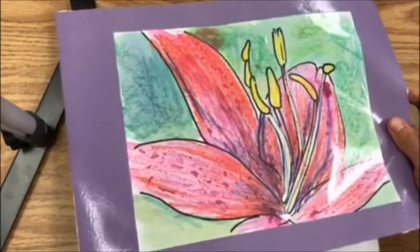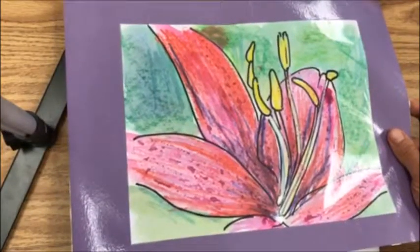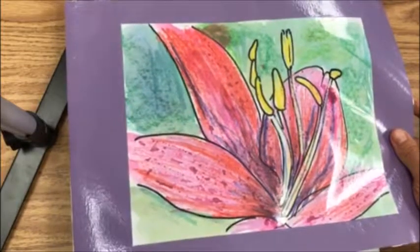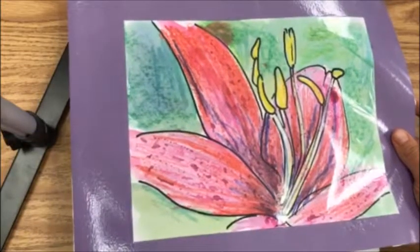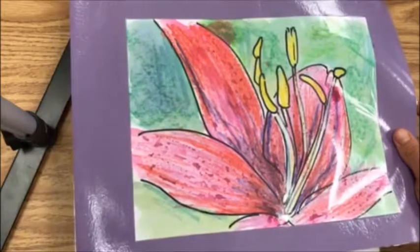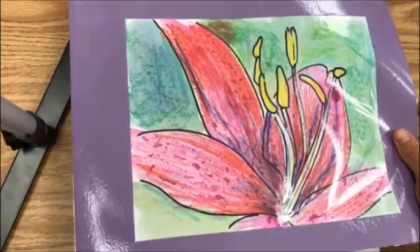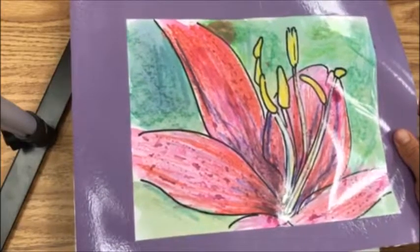Boys and girls, today we're going to be drawing from observation. We're going to be looking at photographs of flowers or other natural things and using our observational drawing skills to copy what we see.